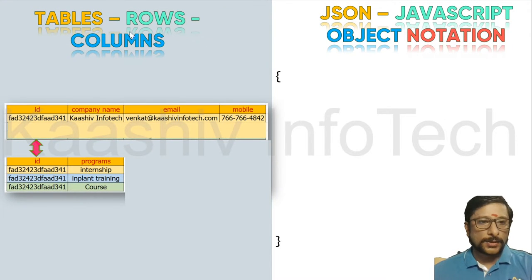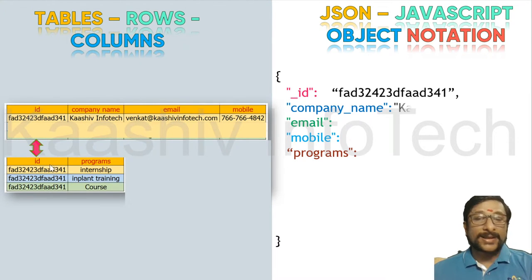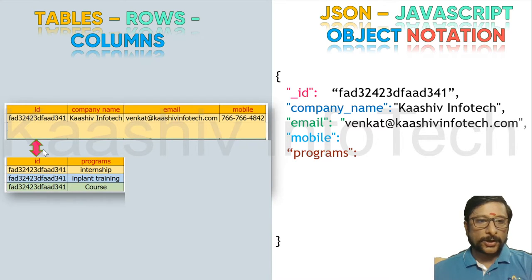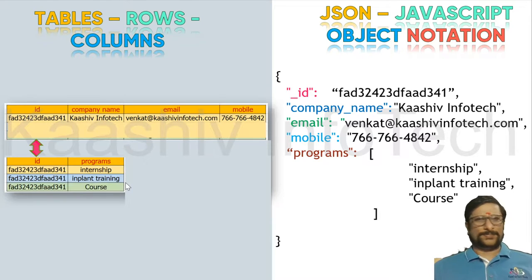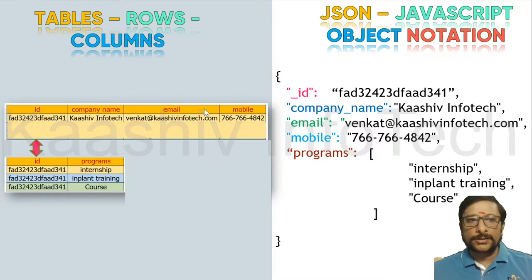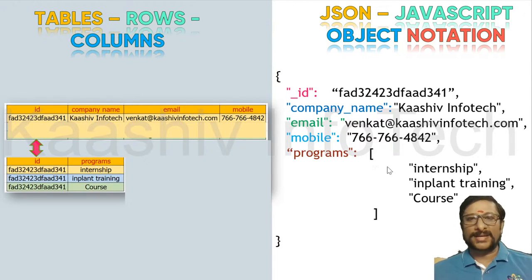I can show you how JSON works. You are able to see ID, company name, email, mobile. And this table is referred to by another table with programs for this particular ID — showing internship, plan training, and course. Creating two tables for this is very complex. Let us have a simplified format: the ID, company name, email, mobile, and programs are listed as a list here — a simple string. Instead of two tables with rows and columns, we make it simple as a JSON document.